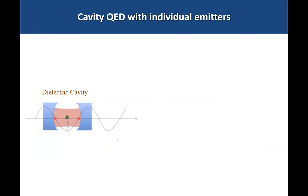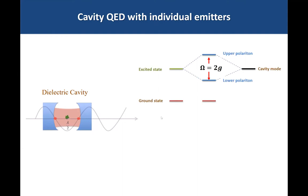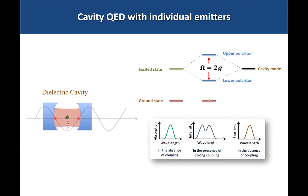What can we do with a bowtie cavity and quantum emitters inside it? This is a problem within cavity quantum electrodynamics. In this field, people classically used dielectric cavities with single emitters and looked at the coupling between the electromagnetic field and the emitter. If the coupling is strong enough, the cavity mode couples to the excited state of the emitter, forming two new polaritonic states — lower and upper polariton — separated by twice the coupling strength, leading to two peaks in the spectrum. This is called vacuum Rabi splitting.